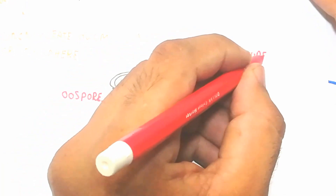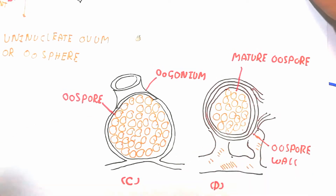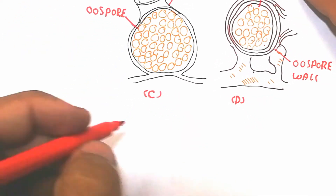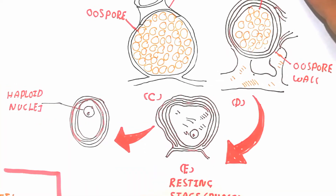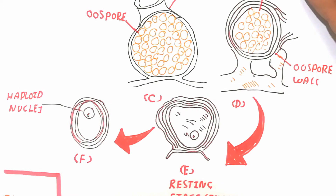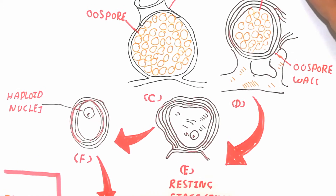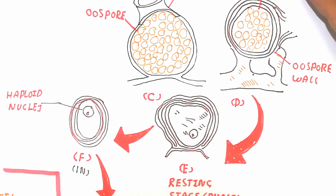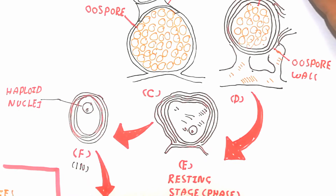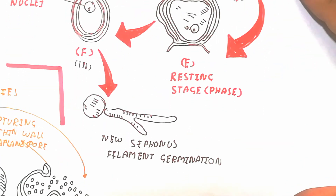When the organ ruptures, the haploid nucleus develops into a new siphonous filament through germination. A new siphonous filament is formed from the germinated oospore. Thanks for watching — please subscribe to the channel.